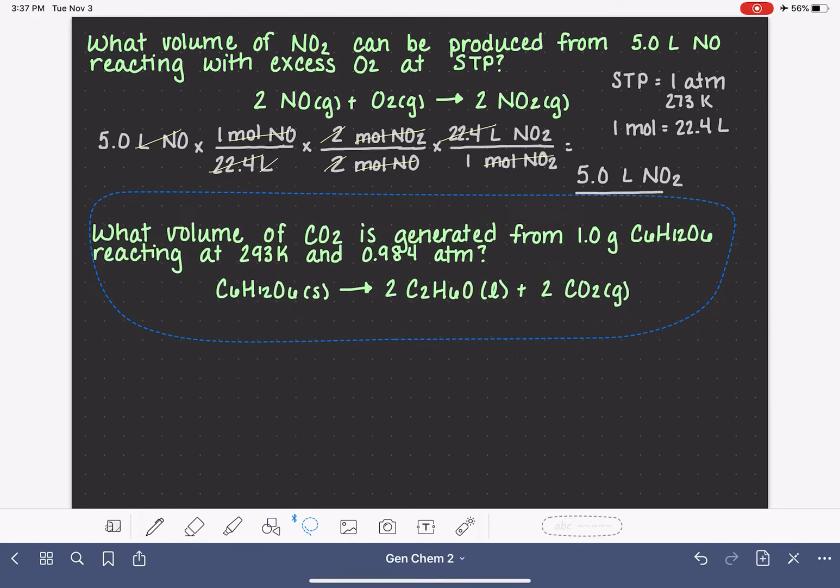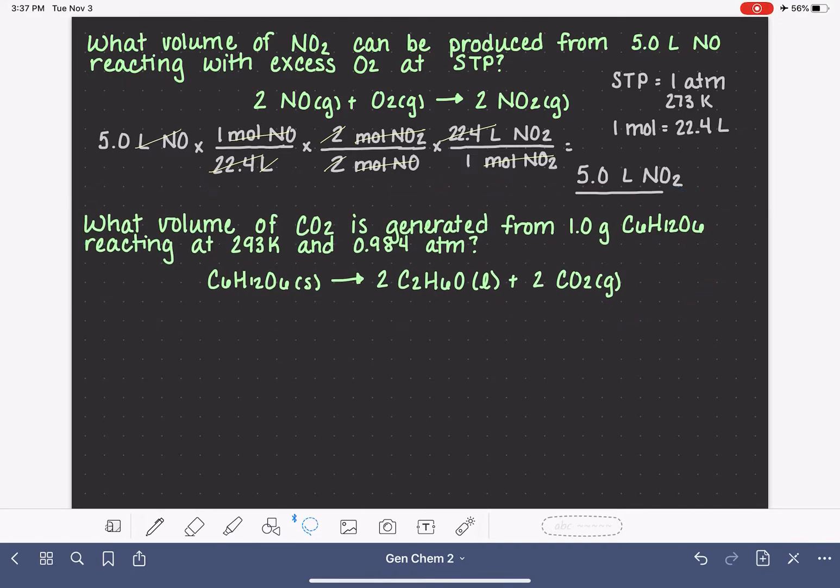Let's take a look at the next one down here. This one's a little bit trickier. Here we have C6H12O6 as a solid, and it is decomposing to make two molecules of C2H6O liquid and also two molecules of CO2 gas. And it tells us that we're starting with one gram of C6H12O6, and it wants us to know what volume of CO2 is being generated. And this time we're not at STP.